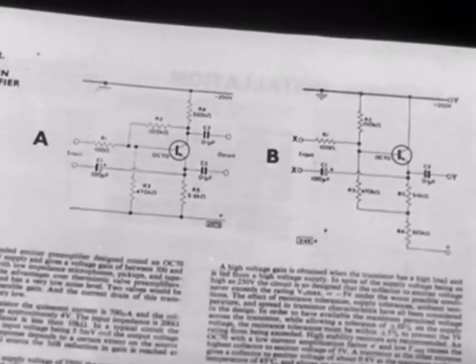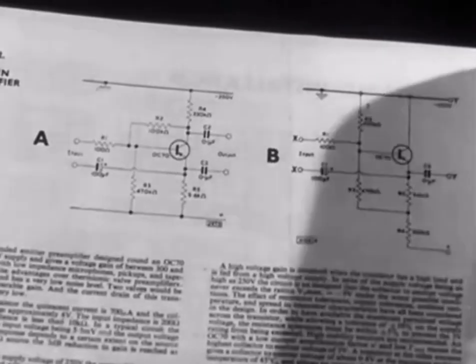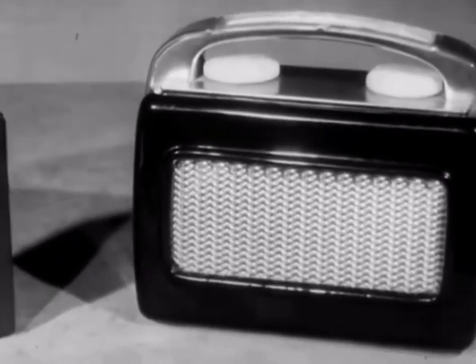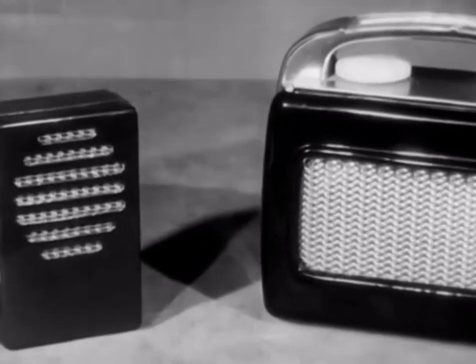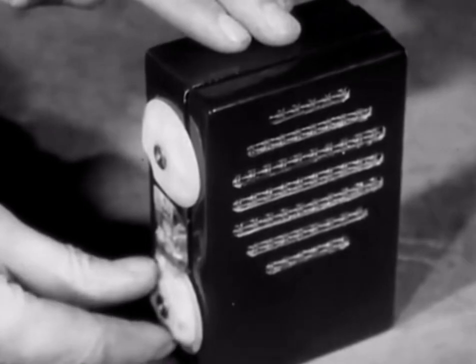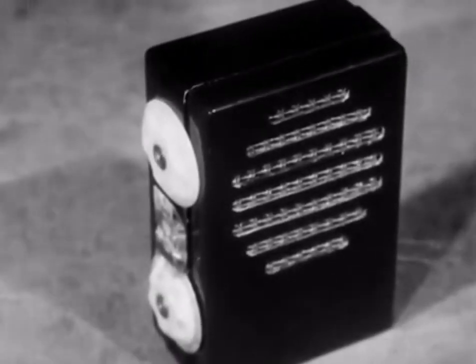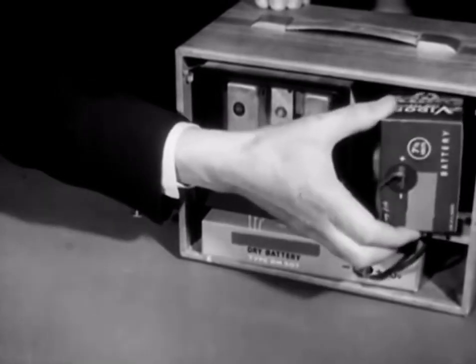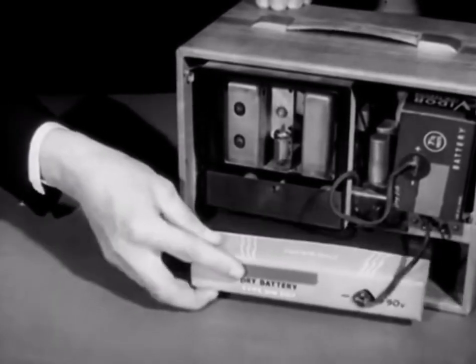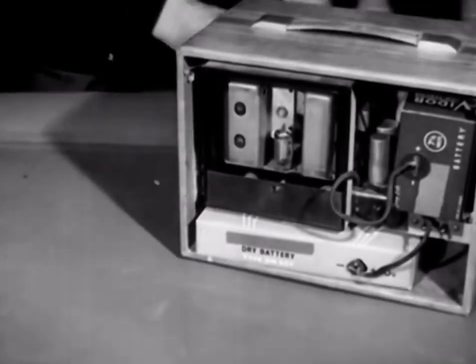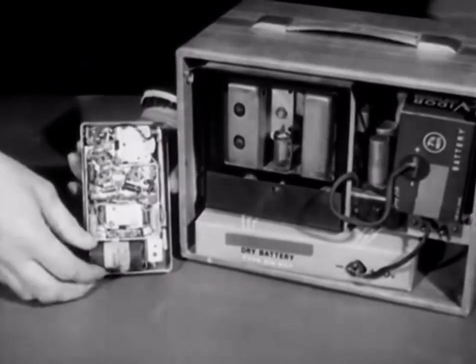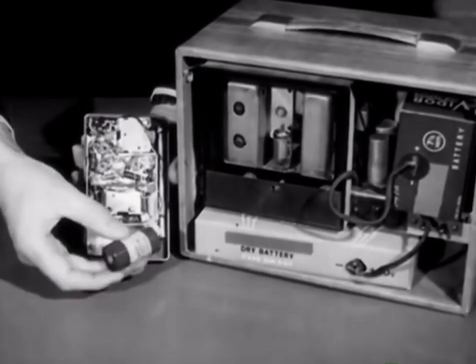The transistor can be used instead of an ordinary valve in all kinds of electronic circuits with many advantages. For example, any apparatus employing transistors can be made lighter and more compact. Not only because the transistors themselves are smaller, but because they require such a small power supply. This portable valve radio needs this low-tension battery and this high-tension battery to operate it. In the transistor radio here, this small low-voltage battery is all that is required to operate the receiver for an equivalent time.